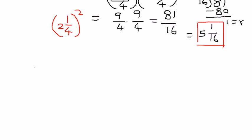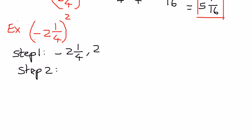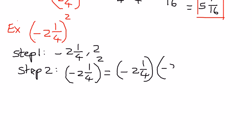Let's take another simple example. This time, let us put the negative sign inside the parentheses: negative 2 and 1 fourth, this whole thing raised to the power of 2. We are going to follow the same process: identify the base term and the exponential term. The base term here is negative 2 and 1 fourth, and the exponential term is 2. In the second step, we expand the base term the number of times the exponential term indicates. So: negative 2 and 1 fourth raised to the power of 2 expands as negative 2 and 1 fourth, times negative 2 and 1 fourth.